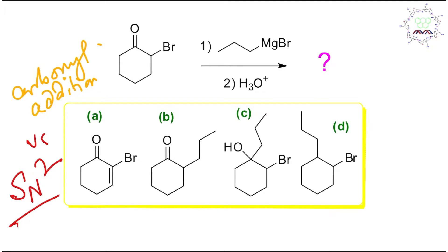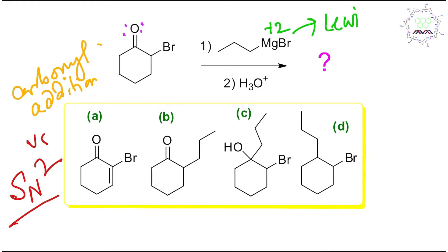Based on my understanding, the right pathway is nucleophilic addition on the carbonyl. The Grignard reagent is not a very strong nucleophile for SN2 substitution. Also, here there is a magnesium atom — alkyl magnesium bromide — and this magnesium is in the +2 oxidation state, so it can act as a Lewis acid.